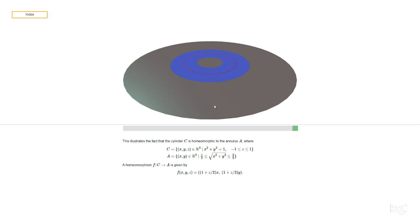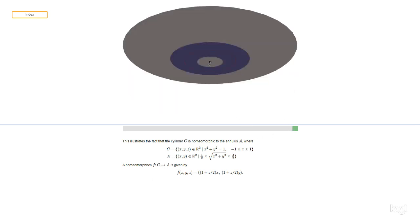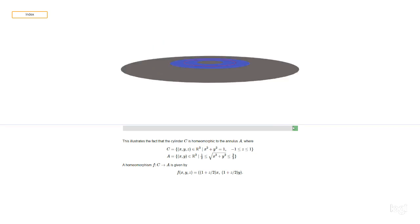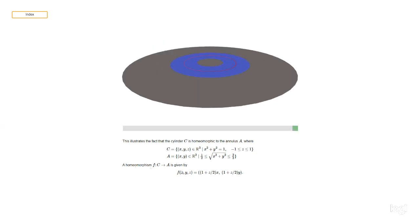And the claim is that these spaces are homeomorphic. And this picture makes it pretty clear that they are. You can just take the cylinder and flatten it out into the plane in the way that you see in the picture.